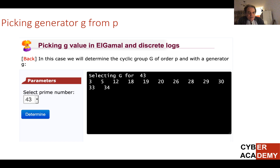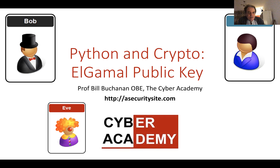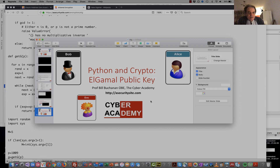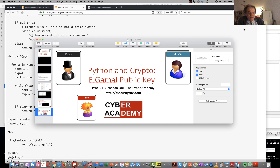So that's how we pick a value of G given a P value — we need to ensure we have a cyclic group. And that's been an introduction to the ElGamal public key encryption method.